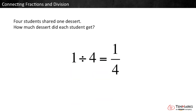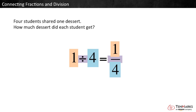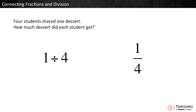Notice the numbers in the equation. One is both the dividend and the quotient's numerator. Four is both the divisor and the quotient's denominator. The fraction bar takes the place of the division sign and means divide. So writing 1 divided by 4 is the same as writing 1 fourth. Both expressions can be read as 1 divided by 4 and can represent this word problem.